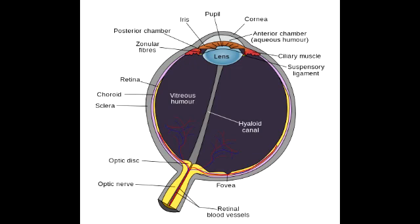As you can see here, the ciliary epithelium is what produces the Aqueous Humor, which is located in the anterior and posterior chambers of the eye. This Aqueous Humor has a lot of different functions, such as maintaining the intraocular pressure, along with providing nutrients and other things. The trabecular meshwork collects the Aqueous Humor that flows through the anterior chamber, and then the canal of Schlemm collects the Aqueous Humor from the trabecular meshwork.